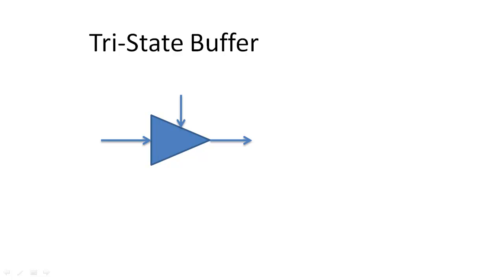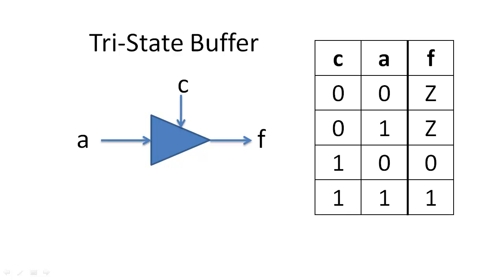The tri-state buffer is drawn with one data input bit, one control input bit, one output bit, and is described by this truth table.